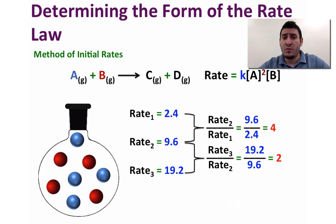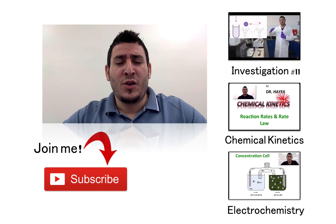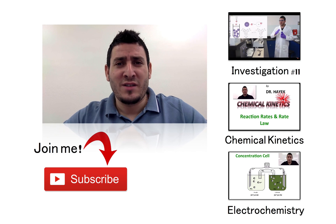What happened to the overall reaction rate after doubling both A and B? Originally the rate was 2.4; after doubling the concentration of each reactant the rate is 19.2. Since 19.2 divided by 2.4 equals 8, doubling the concentration of both reactants increases the reaction rate by 8 times. I hope this video was helpful — please like, share, and subscribe, and I will see you next time.